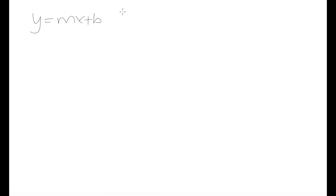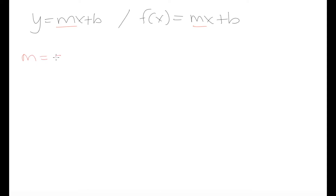There's actually a general formula for linear functions: y = mx + b, or equivalently f(x) = mx + b. This is the general form you'll find linear functions expressed in. The m term is known as the slope of the line, and the slope is the change in y over the change in x — also called rise over run.